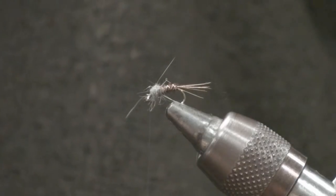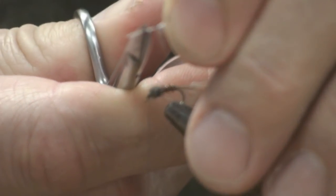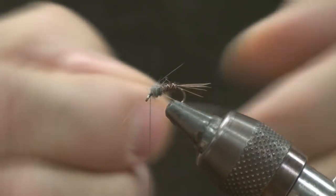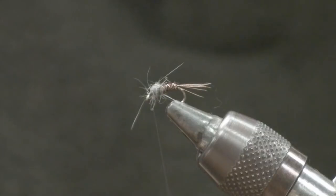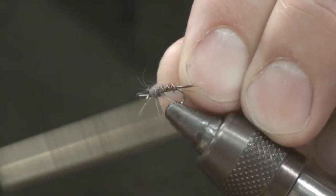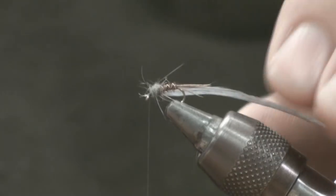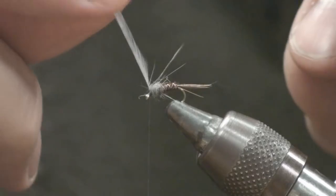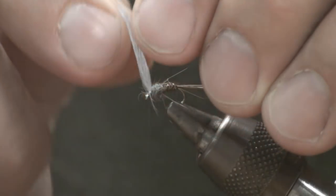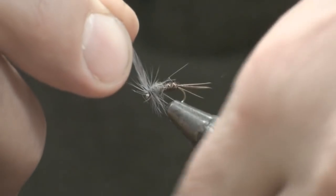Now I'll take my hackle and I'm going to strip off the bottom portion where all that webbing is. And I'm going to tie this in with the convex side towards me. Trim my stem off. And I'm just going to take maybe two turns with this hackle. I don't want a whole lot of hackle so two turns at the most and tie that off.